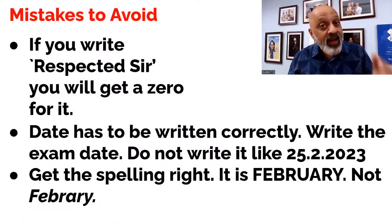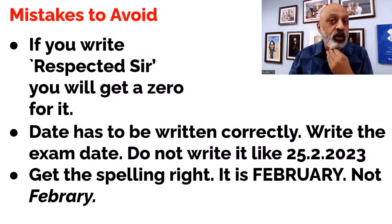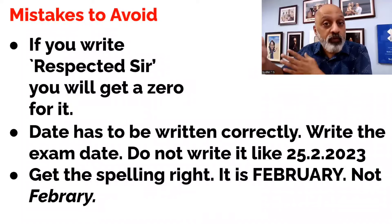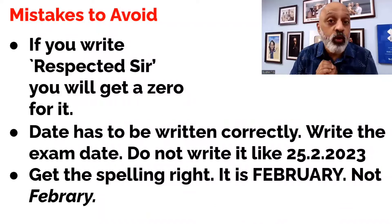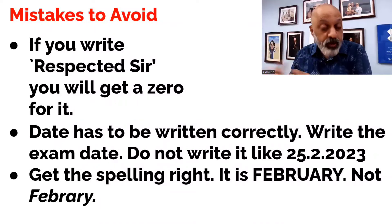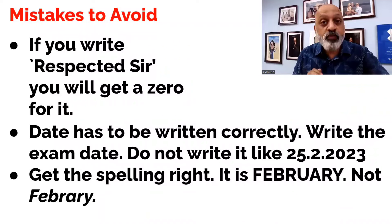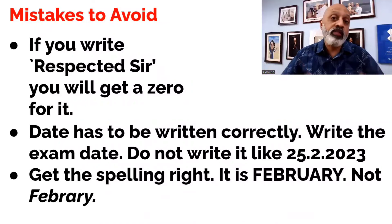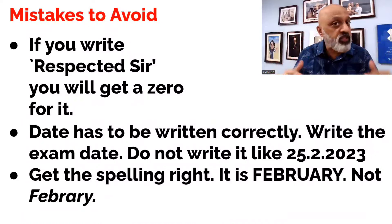The date has to be written correctly — you need to write your examination date. For example, if your board examination is on the 25th of February 2023, you need to write '25th February 2023.' It should not be written as '25/2/2023' — that is not acceptable. Also, be careful about the spelling of the month name, as this is another common mistake many students make.